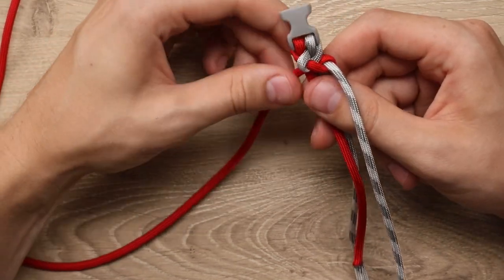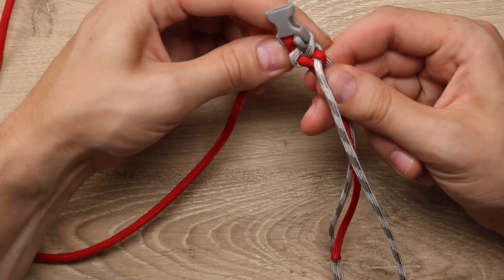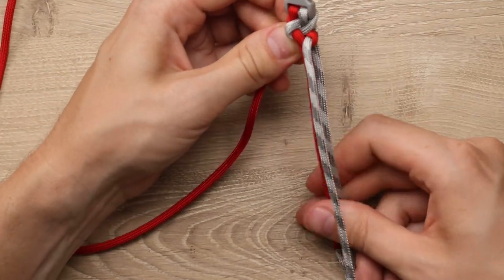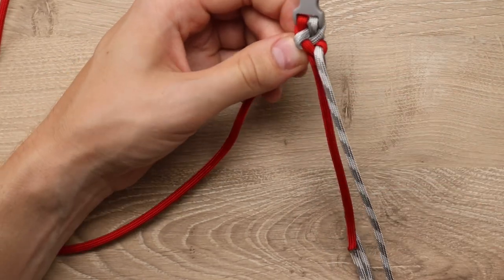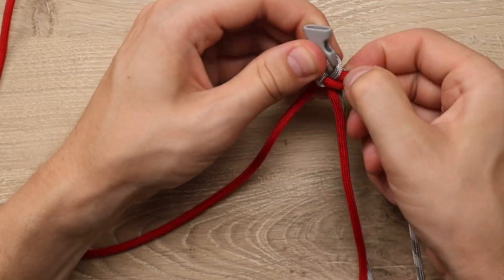As we make this bracelet, we just want to make sure that we don't tighten things down too far. Like if I pull on this red cord too much, we've got the gray one that sticks out the middle of our bracelet, rather than staying on its side like it's supposed to.